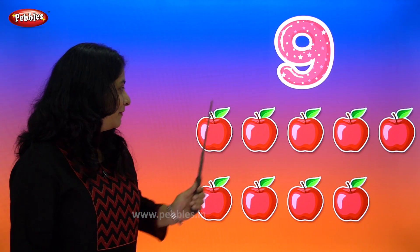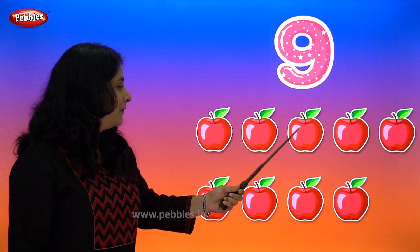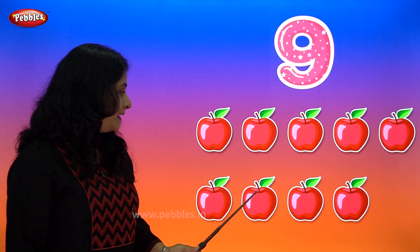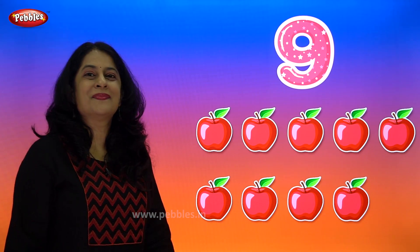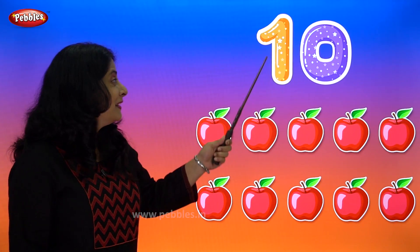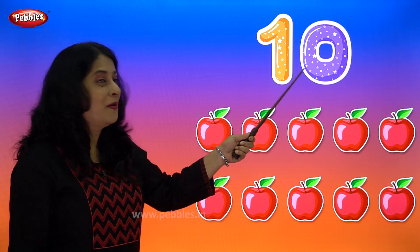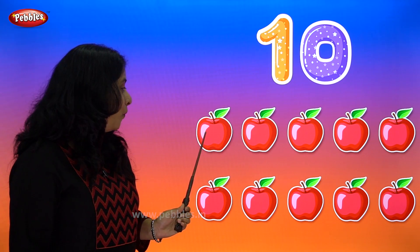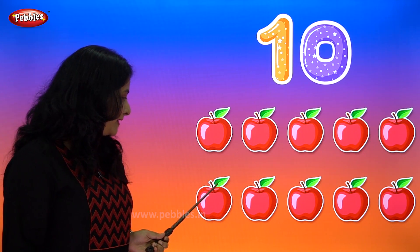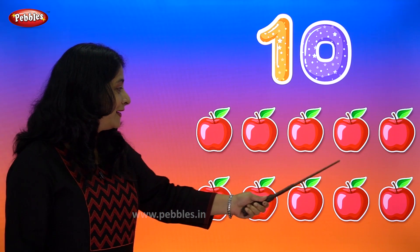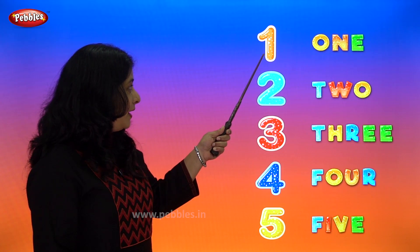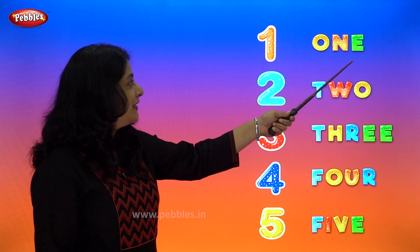9 — 1, 2, 3, 4, 5, 6, 7, 8, 9 — 9 apples. 10 — 1, 2, 3, 4, 5, 6, 7, 8, 9, 10 — 10 apples. Now let's spell: 1 — O-N-E.